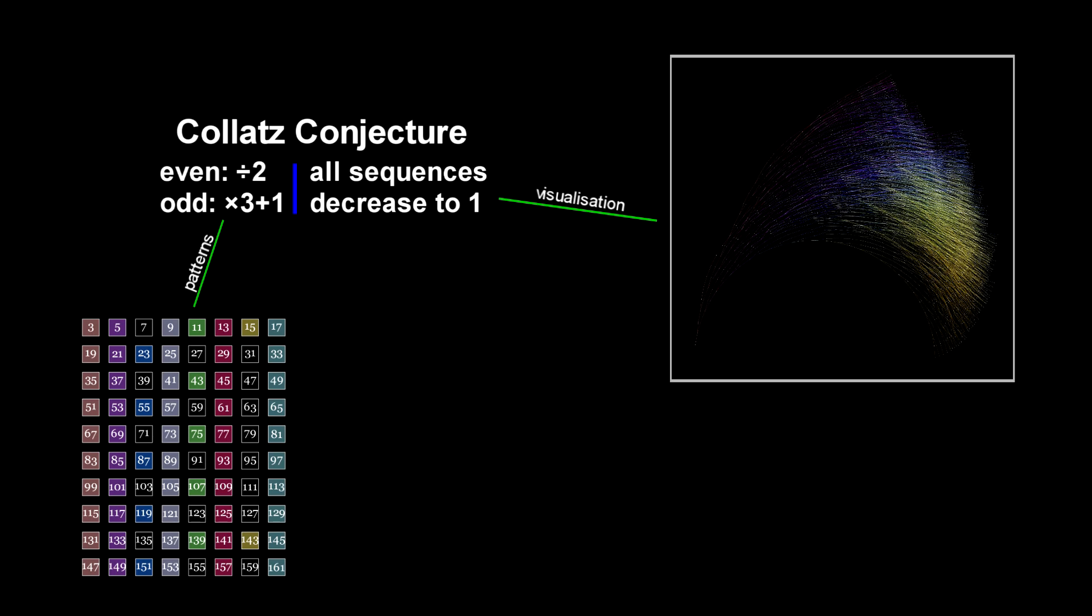This video will not attempt to prove or disprove the conjecture, but will analyze some patterns that arise from its properties. Also, I will attempt to show that if a sequence was found to disprove this conjecture, then one or more values that take these forms could be in that sequence.